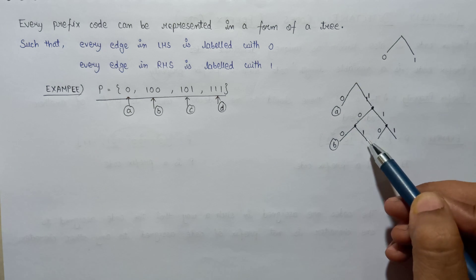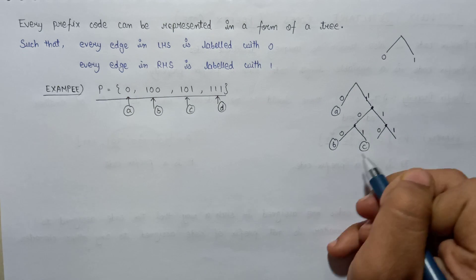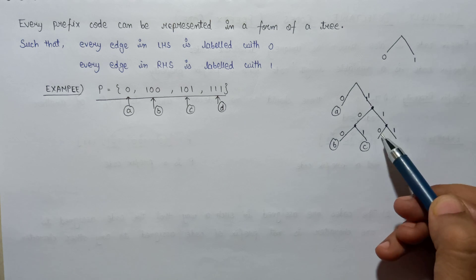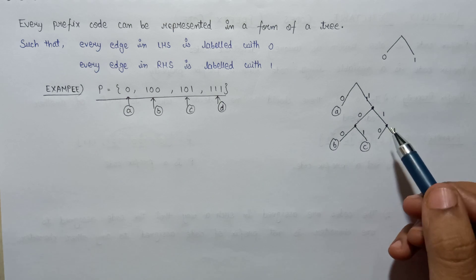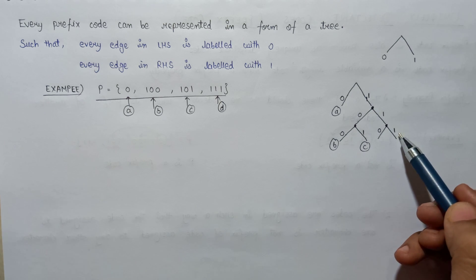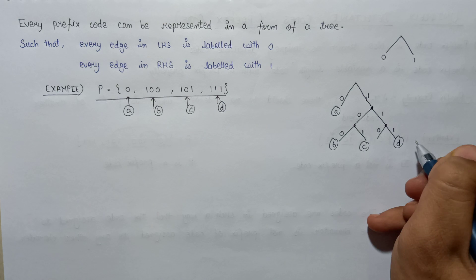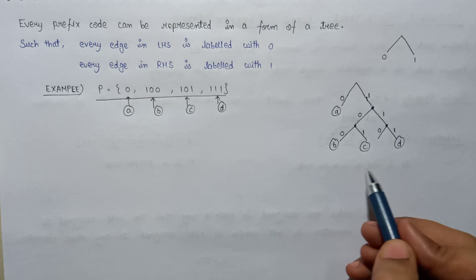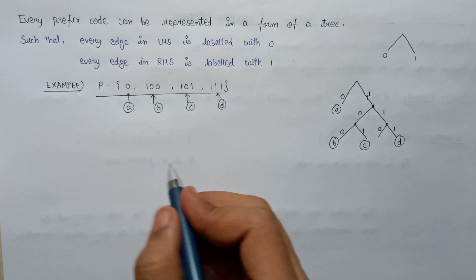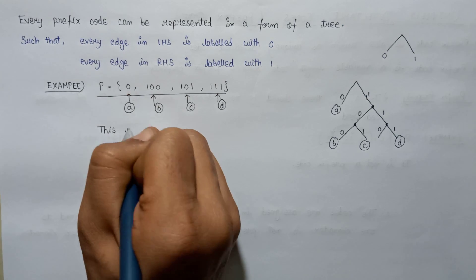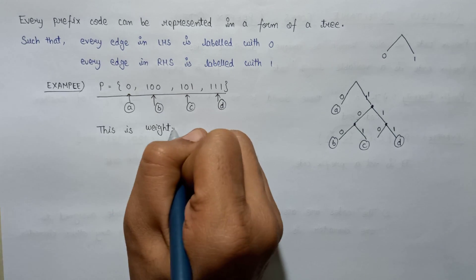The code word 101 — is 101 present in this set? Yes, it is at C. So we write C here. Now checking code word 110 — is it present? No, so we leave this branch. Checking the final code word 111 — is 111 present? Yes, it is at D. So we write D here, and in this way we form the weighted binary tree for all four variables A, B, C, and D.